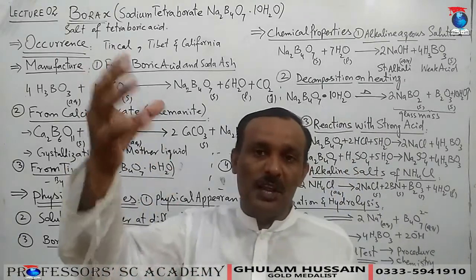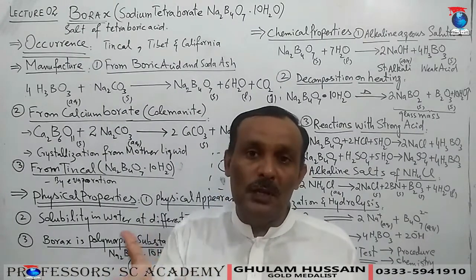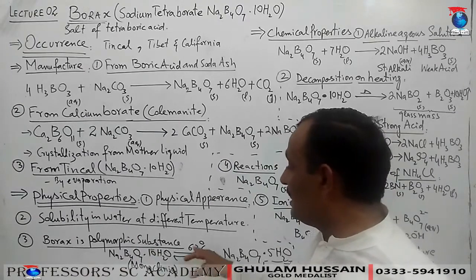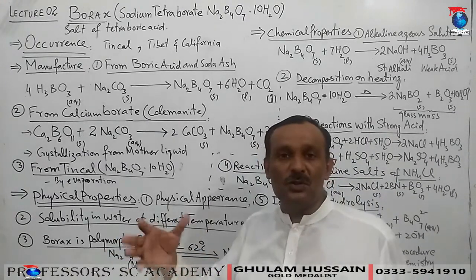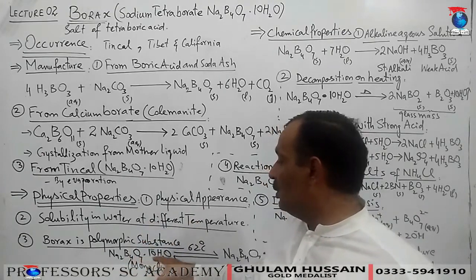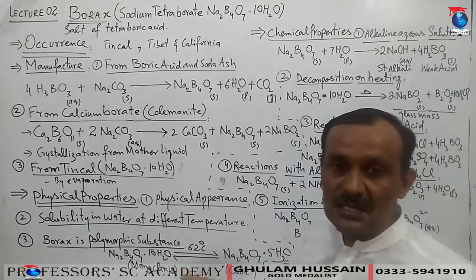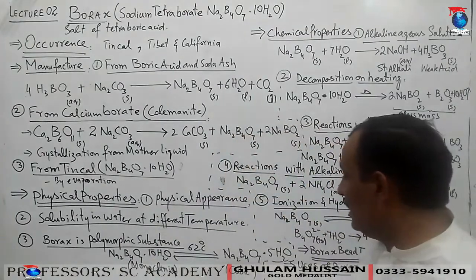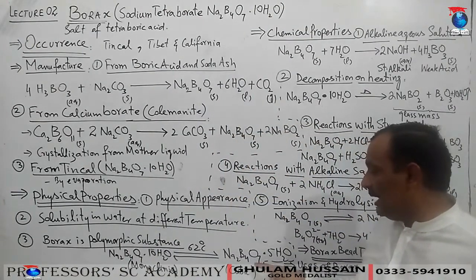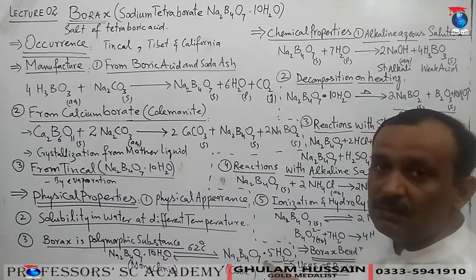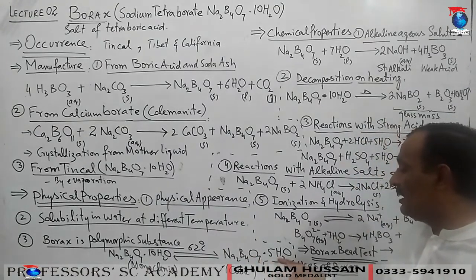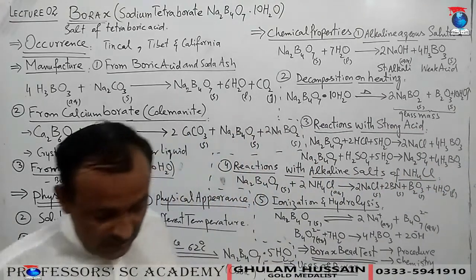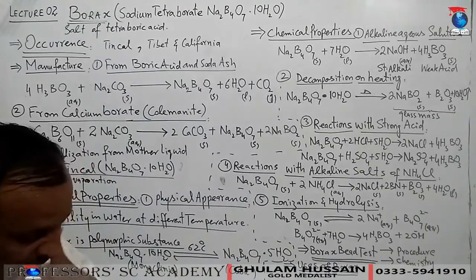Borax is a polymorphic substance. Below 60°C transition temperature, from a saturated solution, Na₂B₄O₇·10H₂O forms monoclinic crystals. Above 62°C, Na₂B₄O₇·5H₂O (pentahydrate) forms cubic crystals — specifically cubic octahedral crystals.